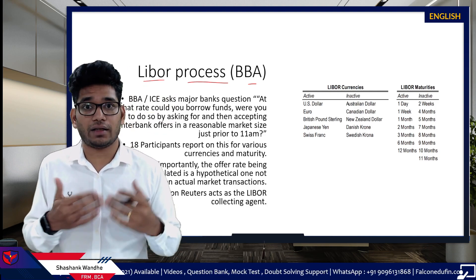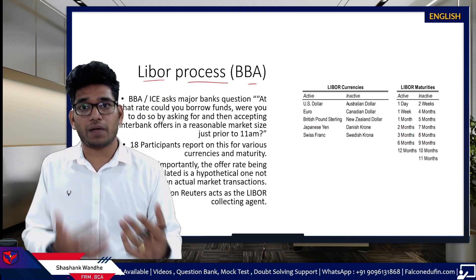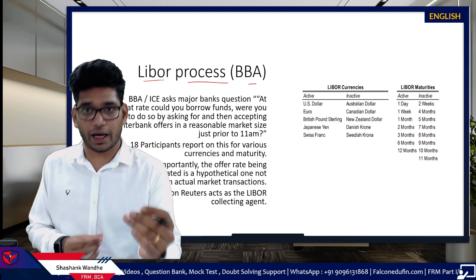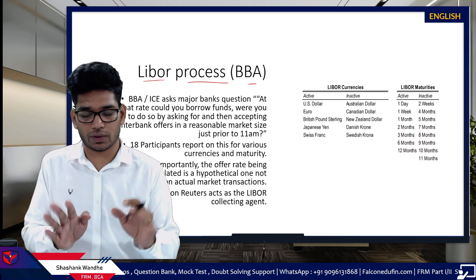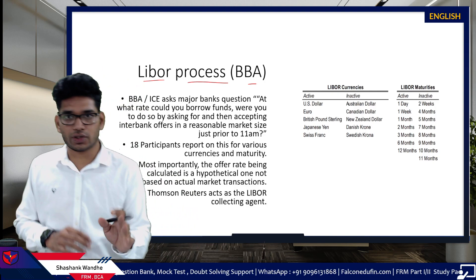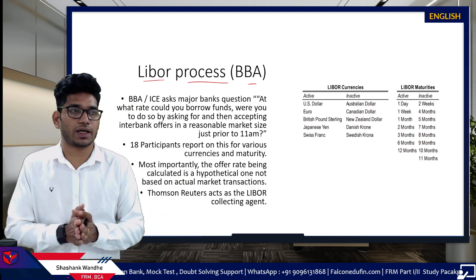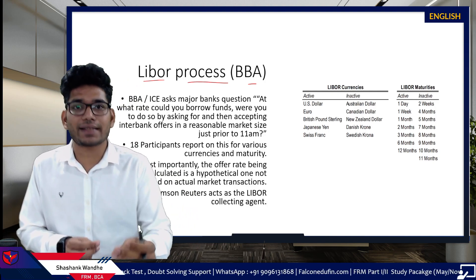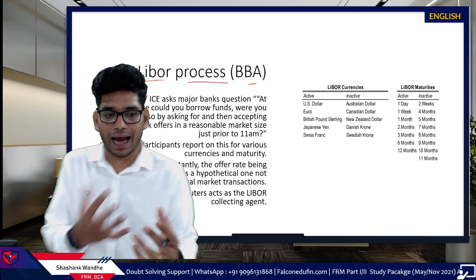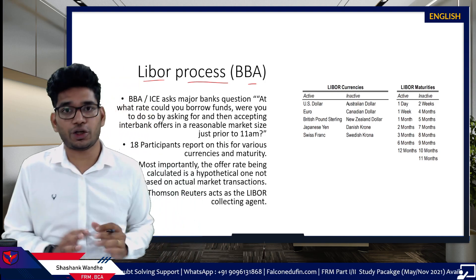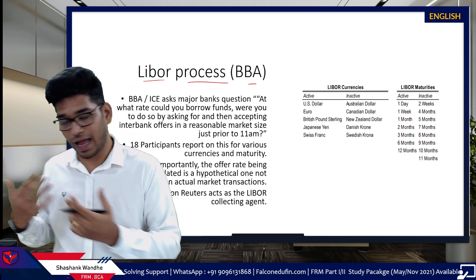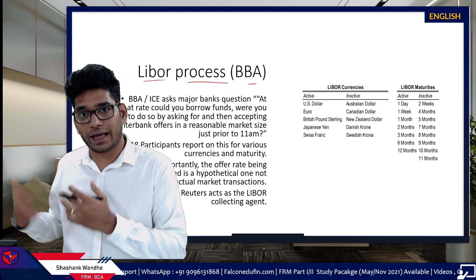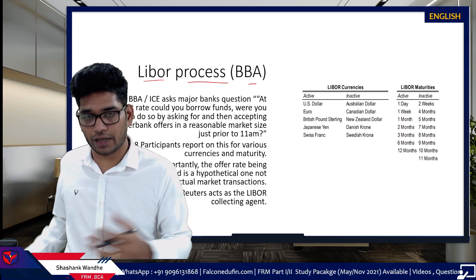If the bank is facing some problem in borrowing, the bank should automatically quote a higher rate. In a normal scenario a bank quotes 3%, but in a stress period the bank should quote slightly more — 4% or 5% — saying that at that rate they are ready to borrow because they are lacking in cash.